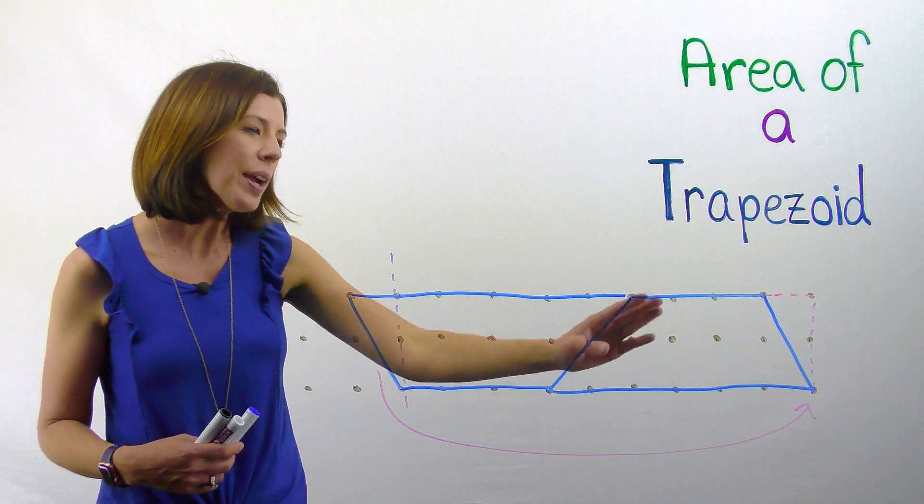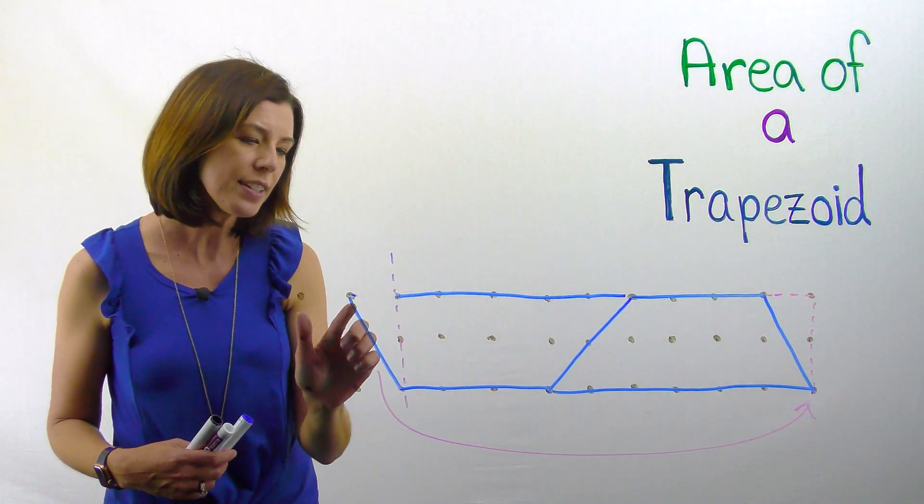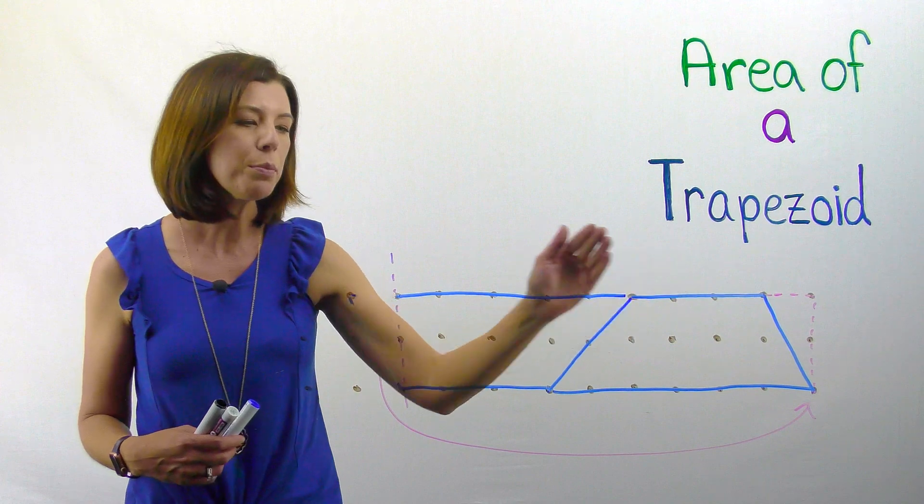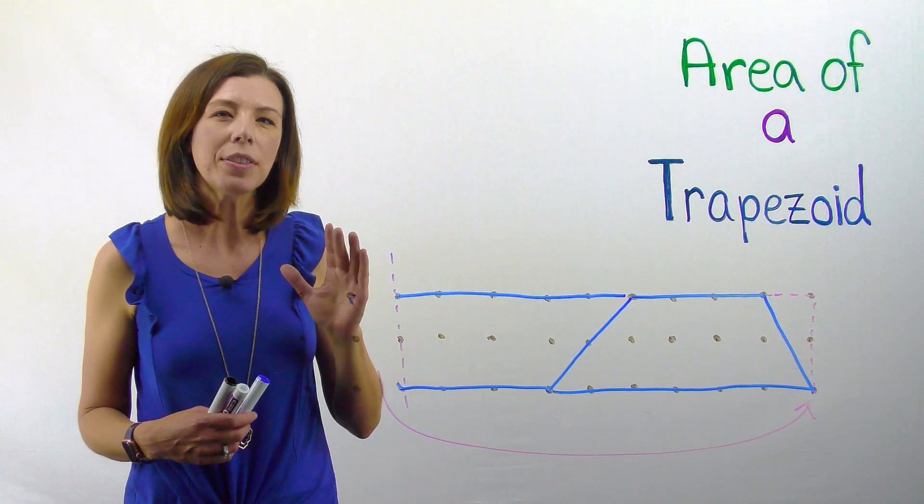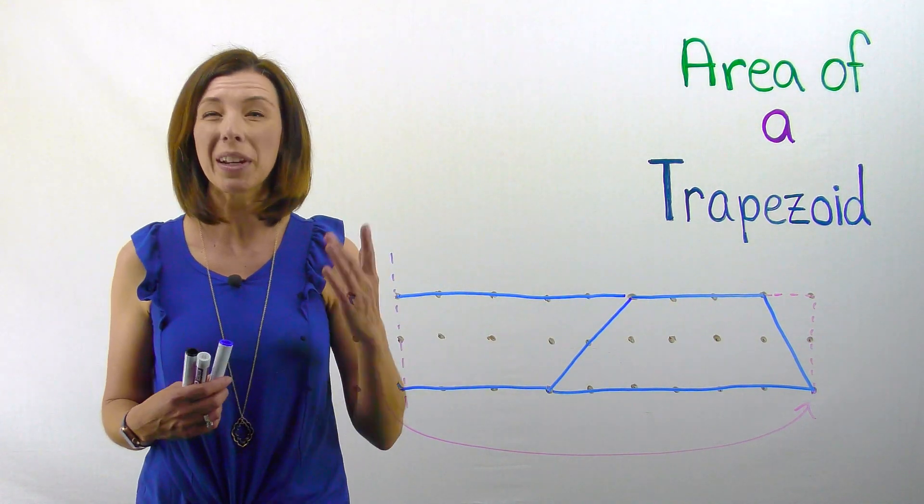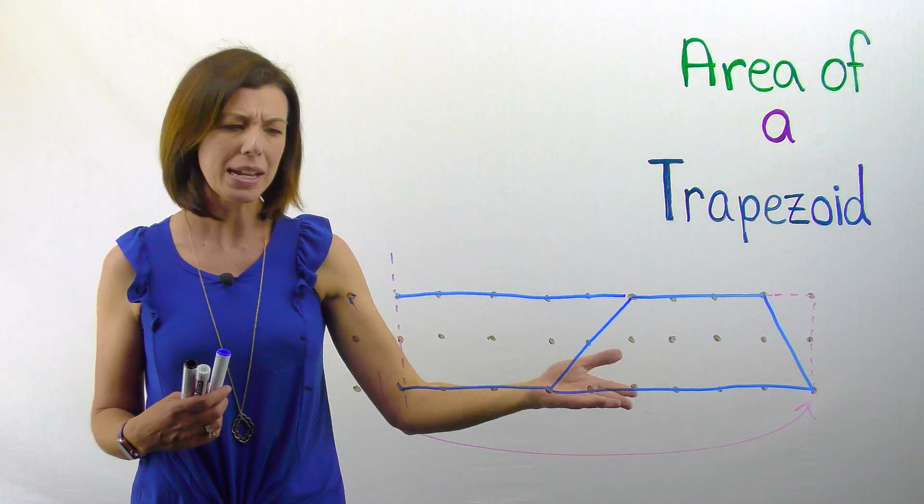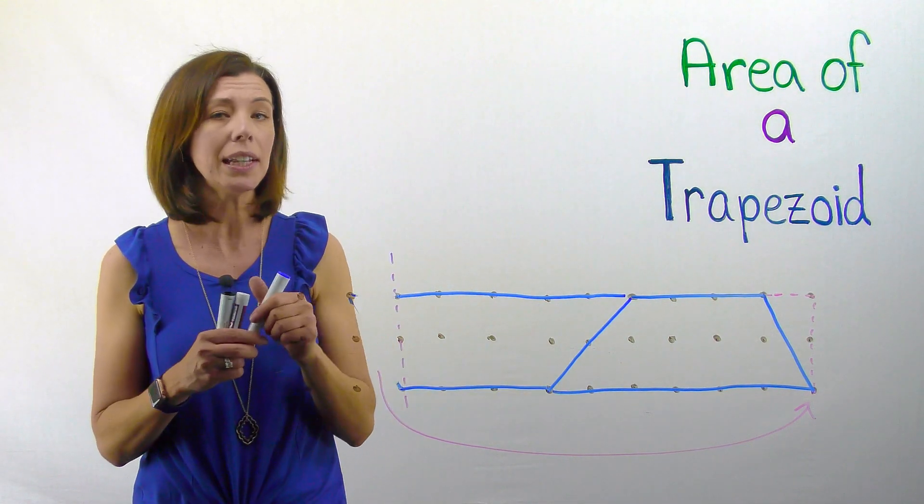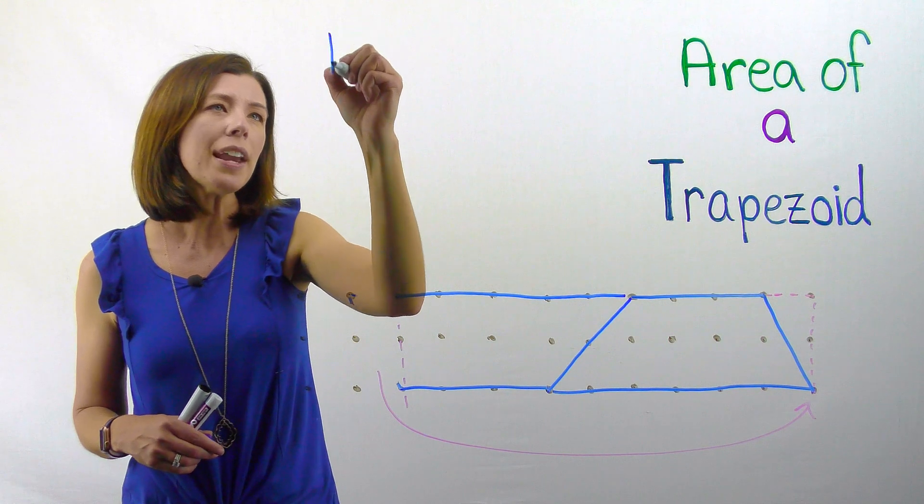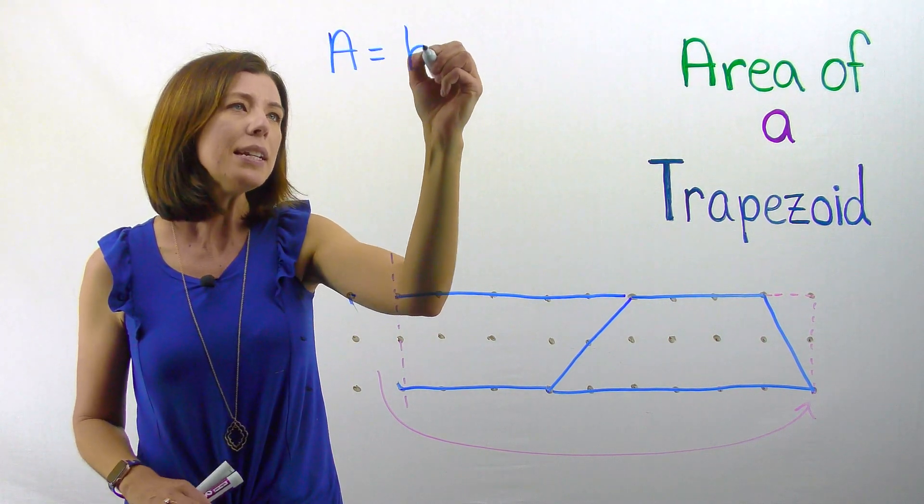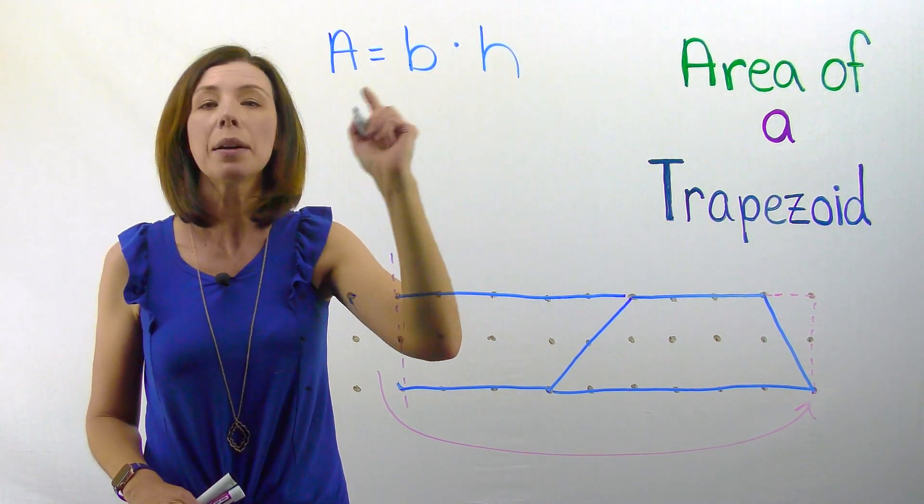Okay. So now you have something that looks like this, and again, this is now gone and we've moved it over. Now I want you to think about what would be the formula for the trapezoid. Now you might be thinking, well, base times height. That seems easy. All right. Let's start there.